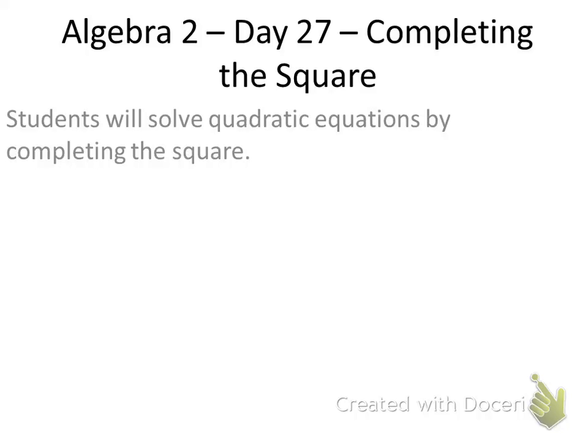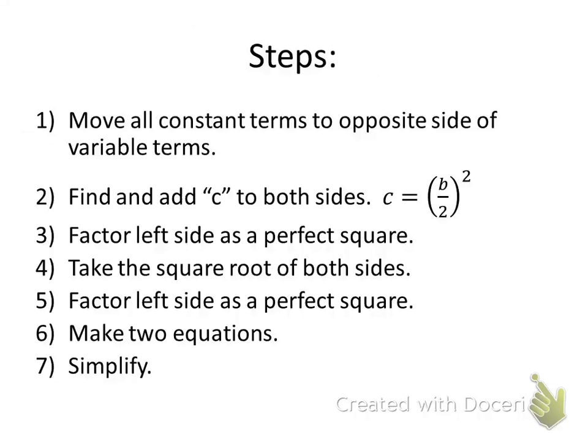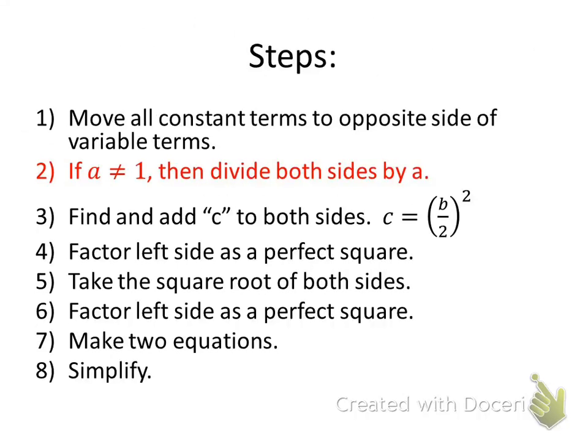This is a lesson on Algebra 2, Day 27, completing the square. Continuing on in these three lessons on completing the square, a couple days ago you learned these steps, and then the last lesson we added step 2: if A is not equal to 1, then divide both sides by A. Today we're modifying step 8. Step 8 is going to say simplify with a common denominator. So that's the step that's added for today.